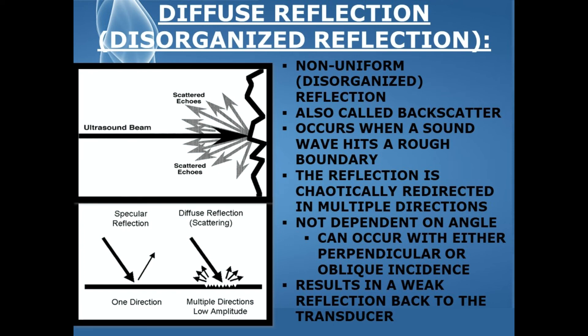In the top diagram, you can see the ultrasound wave hitting that rough boundary and the echo scattering in multiple directions. In the bottom diagram, it shows specular reflection, where the sound wave is reflected back in only one direction, versus diffuse reflection or scattering, where the sound wave is reflected back in multiple directions at a very low amplitude or weak signal.